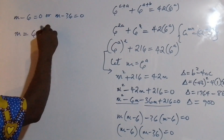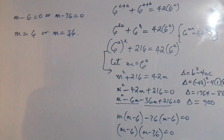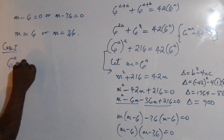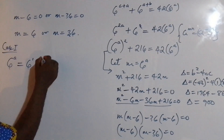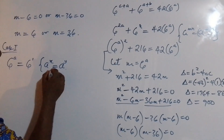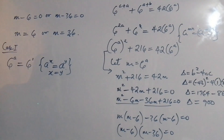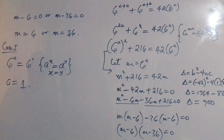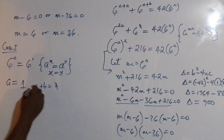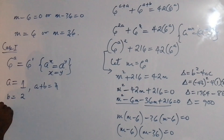So we get (m − 6)(m − 36) = 0, meaning m = 6 or m = 36. Recall m = 6^a. For case one: 6^a = 6 = 6^1, and since the bases are equal the powers must be equal, so a = 1. Then using a + b = 3, we get b = 2.